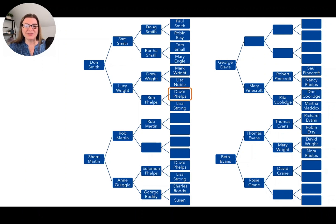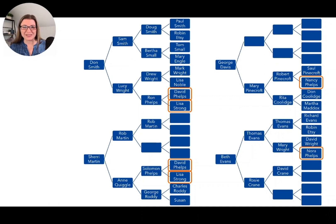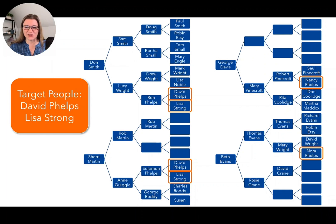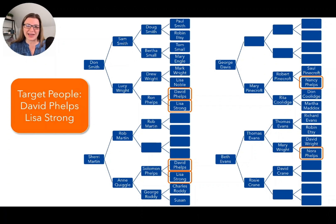We have David Phelps and Lisa Strong on Dawn Smith's tree. We also have David Phelps and Lisa Strong on Sherry's tree. On George's tree we have a Nancy Phelps, and on Beth's tree we have a Nora Phelps. So most likely, these blue clusters formed because these people are all related to David Phelps and Lisa Strong — our target people. In fact, Nancy Phelps and Nora Phelps are probably daughters of David and Lisa. Now, this is pretend data and it all came together nicely, but I'm going to show you how this works with real data.